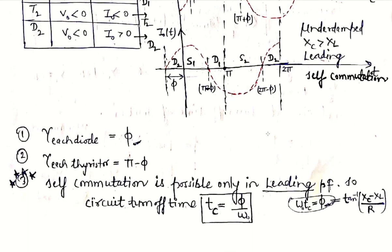Self-commutation is possible only in the leading power factor case. The circuit turn-off time Tc is the time for which the thyristor remains in the off condition. The thyristor is turned off while the diode D is conducting, and the diode conducts for an angle of phi. So the circuit turn-off time is: ωt = phi, or Tc = phi / ωr. The angle phi is the power factor angle, calculated as phi = tan⁻¹((Xc − XL) / R) for the leading case, since Xc must be greater than XL.